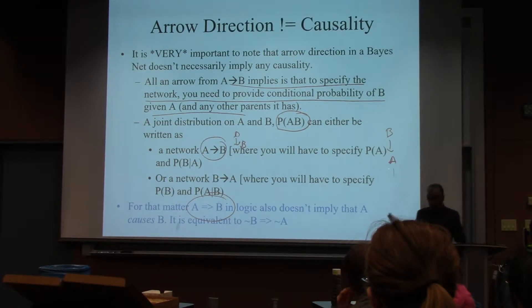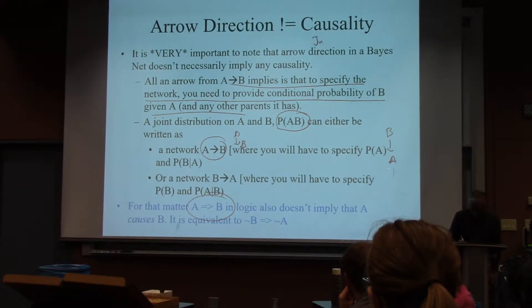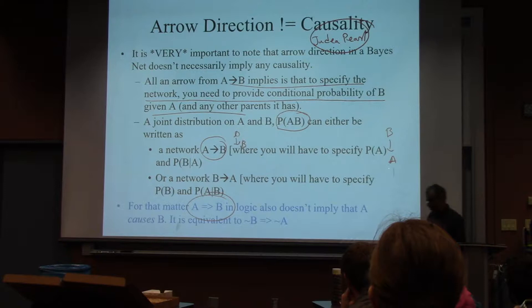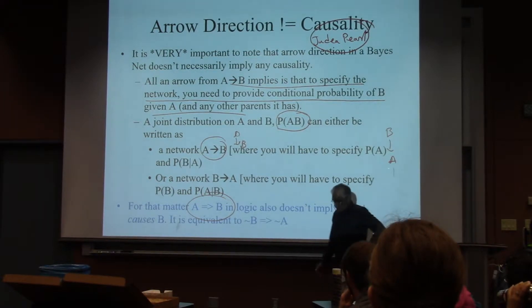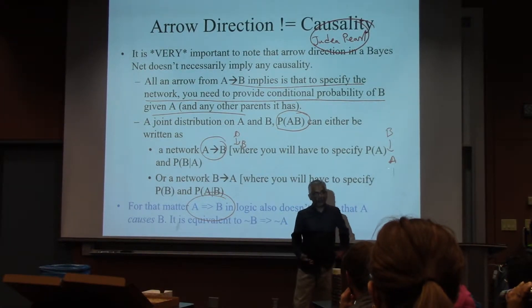In AI, the guy who did the most amount of work on Bayesian networks is Judea Pearl, which is why we talk about the Pearl network. Judea Pearl's current work is a lot about causation — a theory of causation. And in general, a theory of causation requires this notion of interventions.